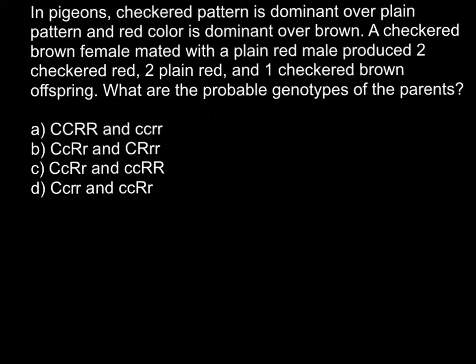A checkered brown female mated with a plain red male produced two checkered red, two plain red, and two checkered brown offspring. What are the probable genotypes of the parents?